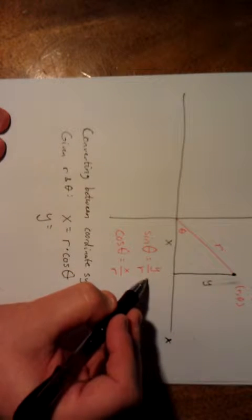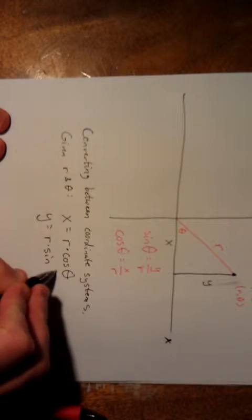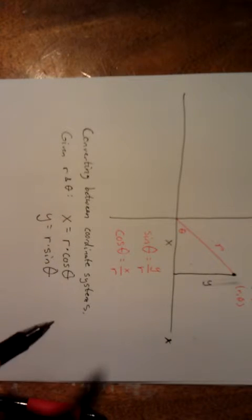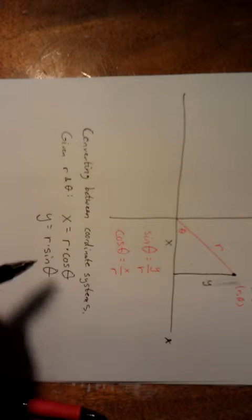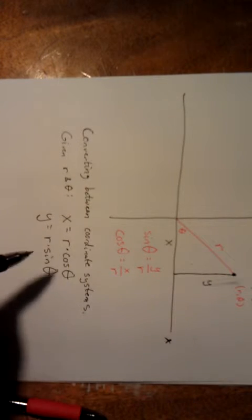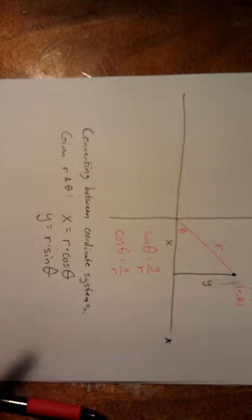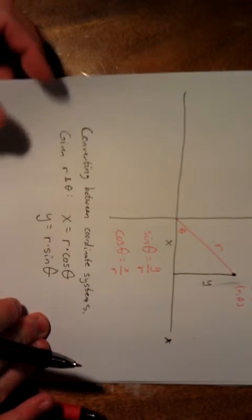And if we take the expression involving the sine of theta, and we multiply both sides by r, we get that y is equal to r times the sine of theta. Now this conversion from polar to Cartesian is unique. If I give you an r and a theta, there is only one possible x and one possible y. It's the only way that it can possibly work.